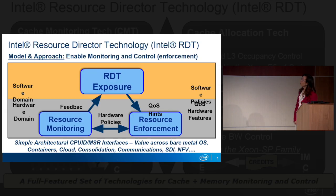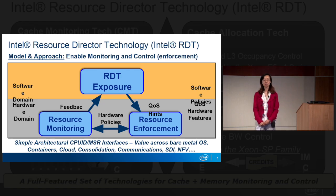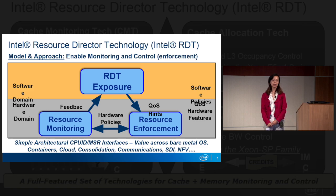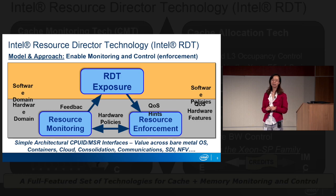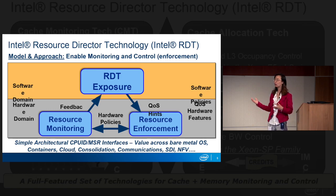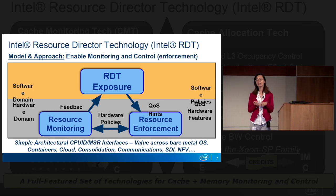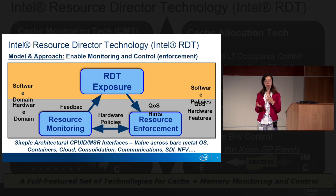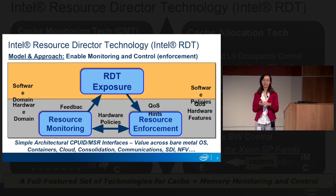To alleviate the shared resource contention problem, Intel provides Resource Directory Technology, also known as Intel RDT, that helps control how shared resources such as the last-level cache and memory bandwidth are used by applications, virtual machines, and containers.